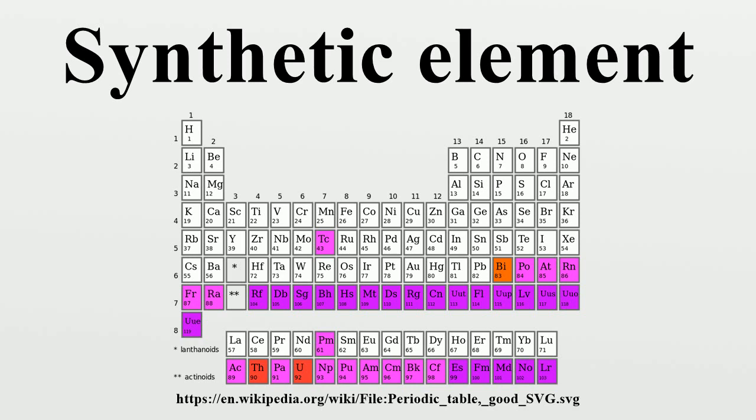All elements with atomic numbers 1 through 94 are naturally occurring at least in trace quantities. But the following elements are usually produced through synthesis. Except for polonium and francium, they were all discovered through synthesis before being found in nature.